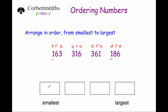Since 163 and 186 both have a one in the hundreds column, we move across to the tens column. 163 has a six in the tens column whereas 186 has an eight, so 163 is smaller than 186. The smallest number is 163, and the next is 186.